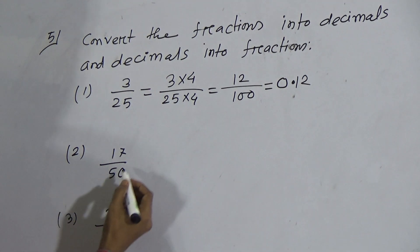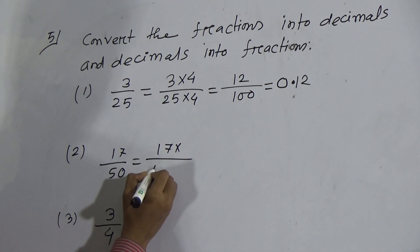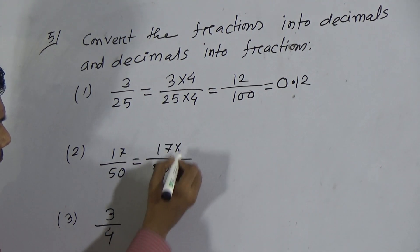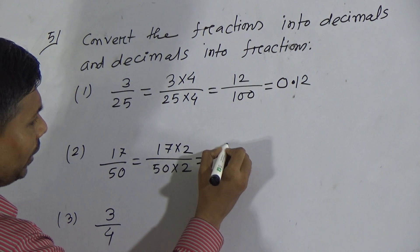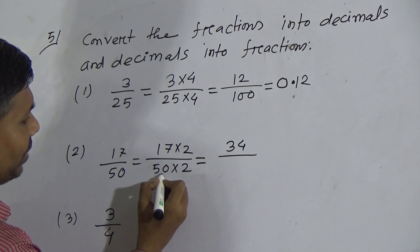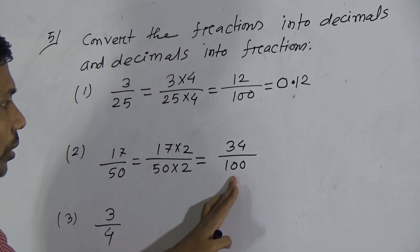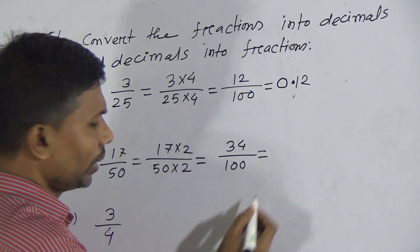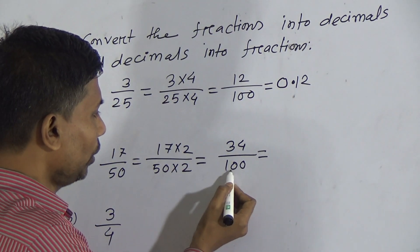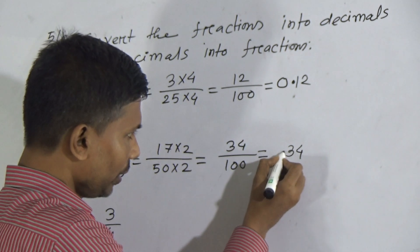Similarly, 17 by 50 — if we multiply both numerator and denominator by 2, then we get 17 into 2 equals 34, and 50 into 2 equals 100. Now we divide 34 by 100. Using the short method: 100 has two zeros, so write 34 then place the decimal point — the result is 0.34.